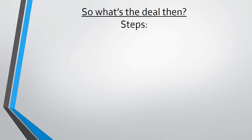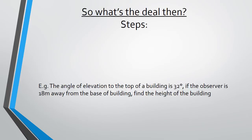So what's the deal then? Let's look at some steps and work through an example. First step is to read the question carefully: the angle of elevation to the top of a building is 32 degrees. If the observer is 18 meters away from the base of the building, find the height of the building.